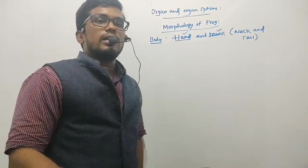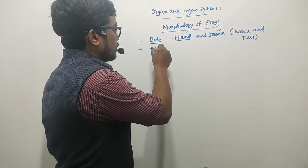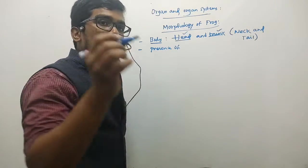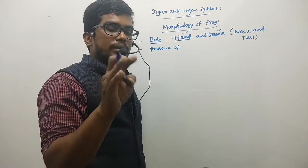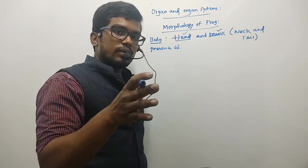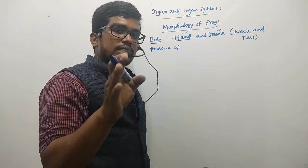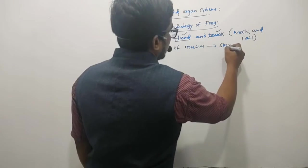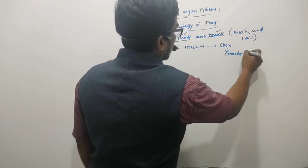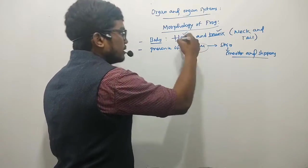Secondly, we can find the presence of mucus glands as well as poisonous glands present in the skin of the frog. The mucus glands release mucus, and the presence of mucus makes the skin smooth and slippery — it will always be smooth and slippery because of the secretion of mucus.